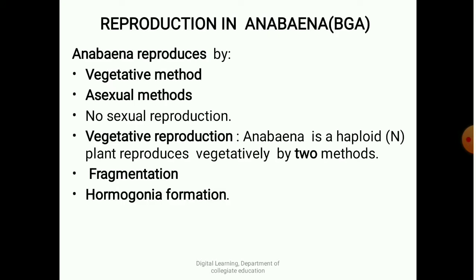Coming to the first slide: reproduction in Anabaena, a blue-green alga. Anabaena reproduces by two methods — one is the vegetative method and the other is the asexual method. There is no sexual reproduction. Coming to vegetative reproduction, Anabaena is a haploid plant body and reproduces vegetatively by two methods: one is fragmentation and the other is harmogonia formation, or hormogones.